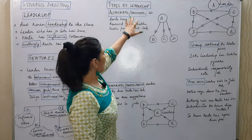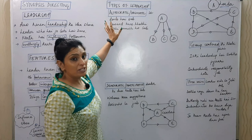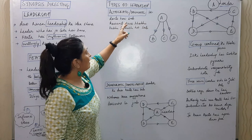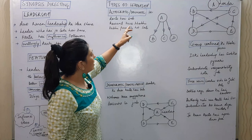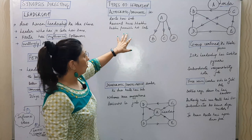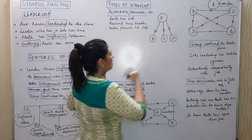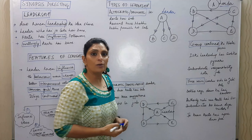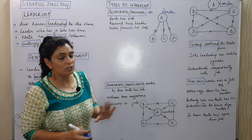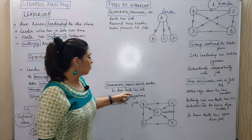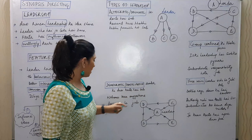Next we come to the types of leadership on the basis of use of authority. Autocratic leader is dogmatic — everyone fears him, he may reward sometimes or punish sometimes. Democratic or participative leader is one everyone appreciates — he welcomes suggestions when making decisions.